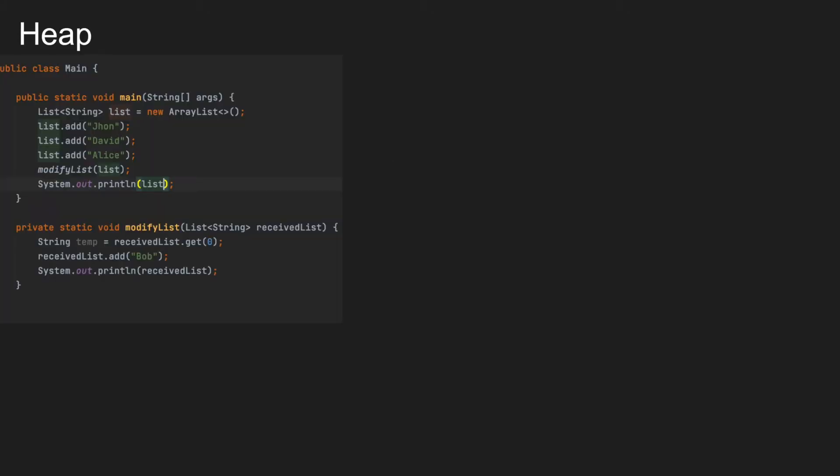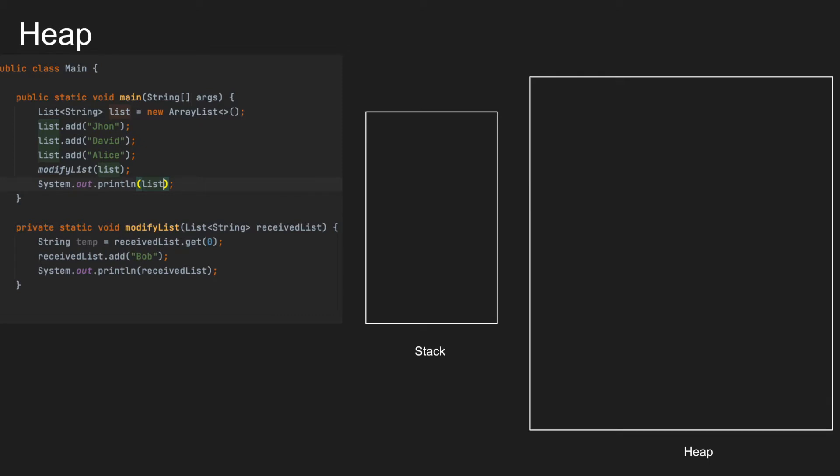Let's explore the heap using a dry run. I have a simple class which contains two functions: main and modifyList. I have stack and heap memory space, and I'm going to explore line by line how data is stored in the stack as well as the heap.